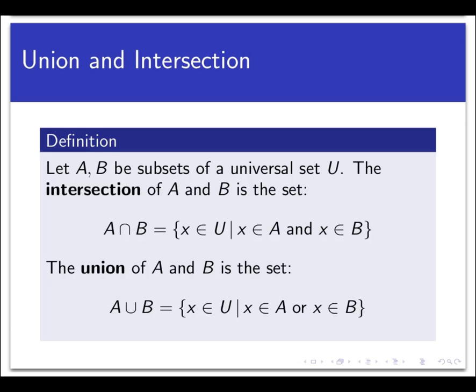The first two operations we're going to consider are the intersection and union of two sets. Let's suppose we have two sets A and B, and we also have a universal set called U in which those two sets live. The intersection of two sets — we use this upside-down U symbol to denote this — is a third set whose elements are all the elements that are in both A and B at the same time. And the union of two sets — we use the U-shaped symbol — is the set of all elements that are in either A or B or both.